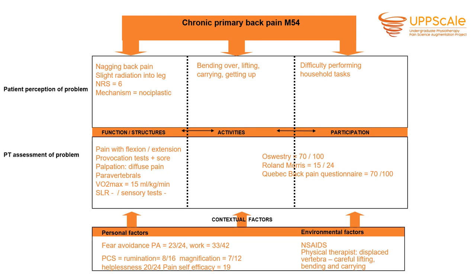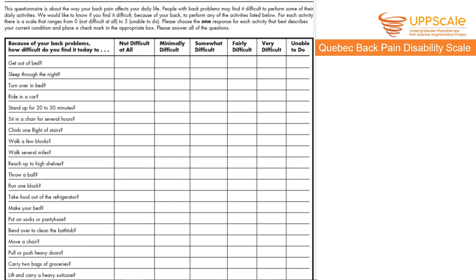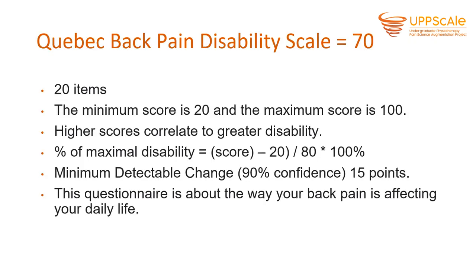So what do all these numbers mean? These are her scores at the beginning of treatment. The Quebec Back Pain Disability Scale has 20 items on activity impairments scored from not difficult at all to unable to do. The minimum score is 20 and maximum is 100, with higher scores correlating to greater disability. Her score of 70 gives a percentage of maximal disability of 62.5%, which is on the high side. The minimal detectable change is 15 points, indicating quite high impairment in participation.